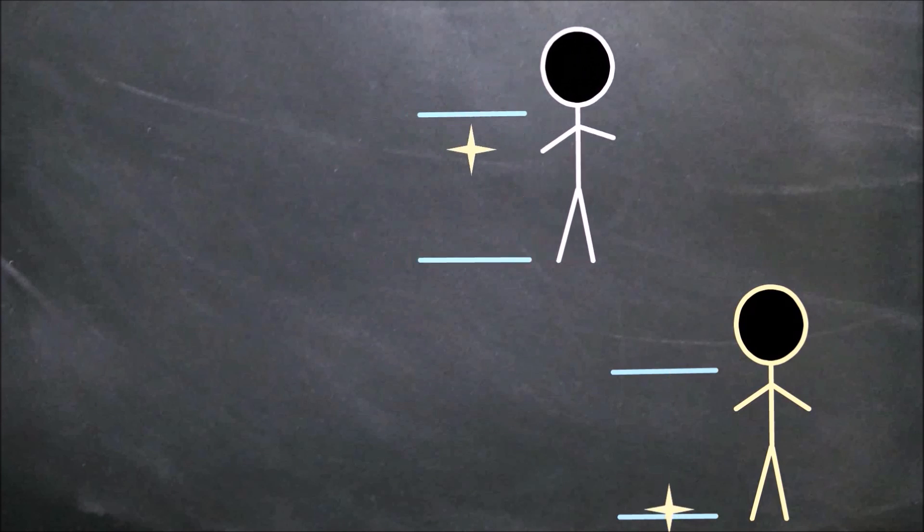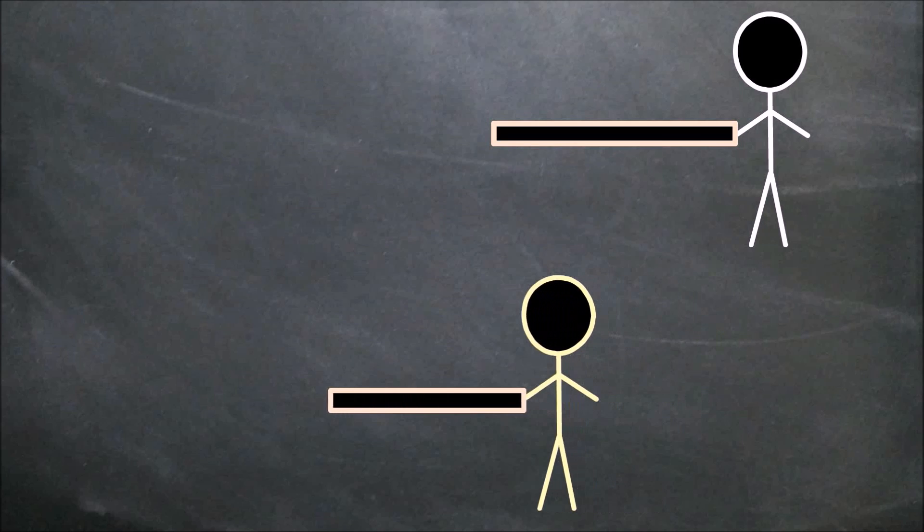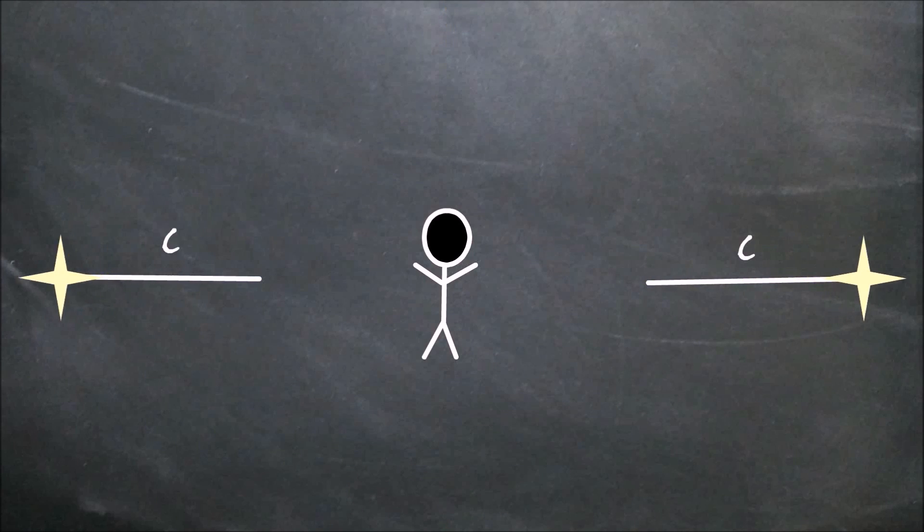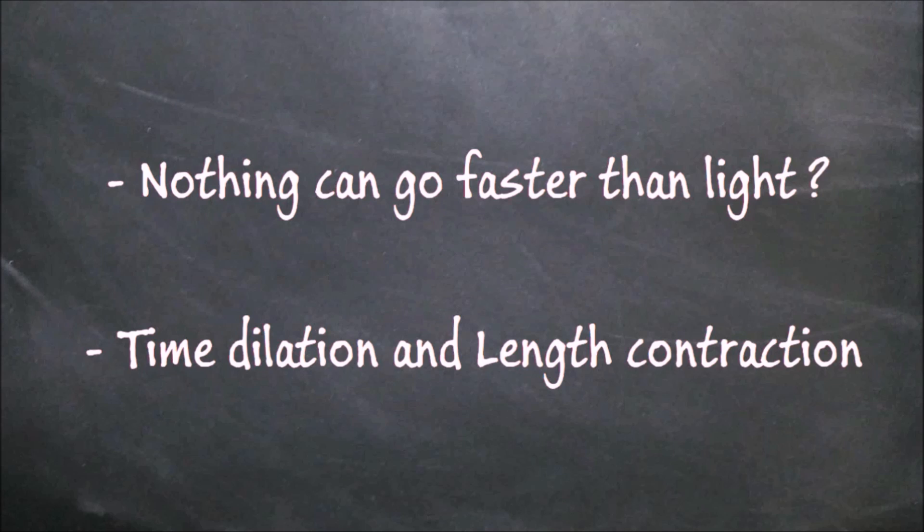In Part 2, we covered the second point, finding out that time dilation and length contraction are simply logical consequences of light traveling at c in a vacuum relative to every observer. But what about the first point?